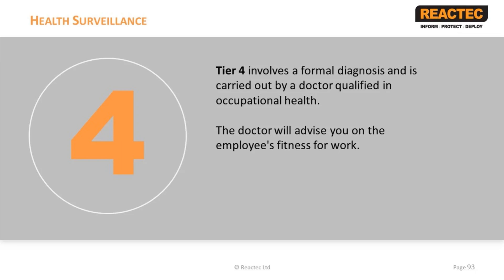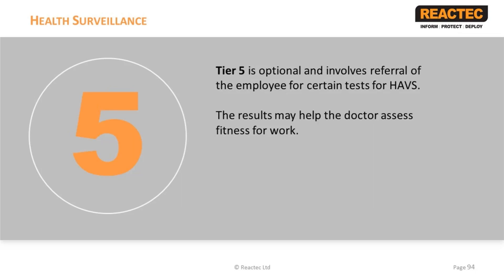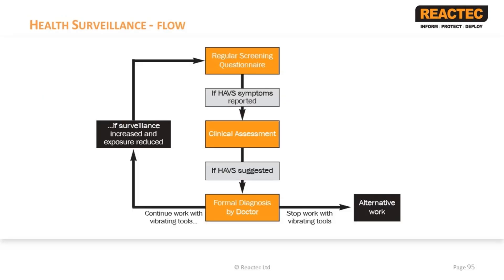It may also be appropriate to advise your employee that the vascular form of vibration white finger, and Carpal Tunnel Syndrome, are both prescribed diseases under the Industrial Injuries Disablement Benefit Scheme. Tier 5 is not required as part of routine health surveillance for a workforce exposed to hand-arm vibration, but is considered potentially useful for studying the progression of the disease. This slide shows the flow of the health surveillance process that we've just covered.